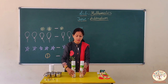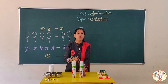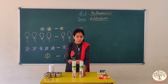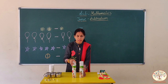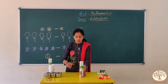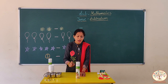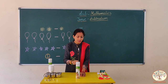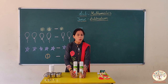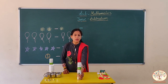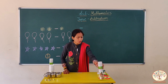Now, look here. I have two room fresheners. Let's count them — one, two. How many room fresheners are there? Two. Now, if I take away one room freshener, how many room fresheners are left? Now I have only one. There is only one room freshener. So, two minus one is equal to one.